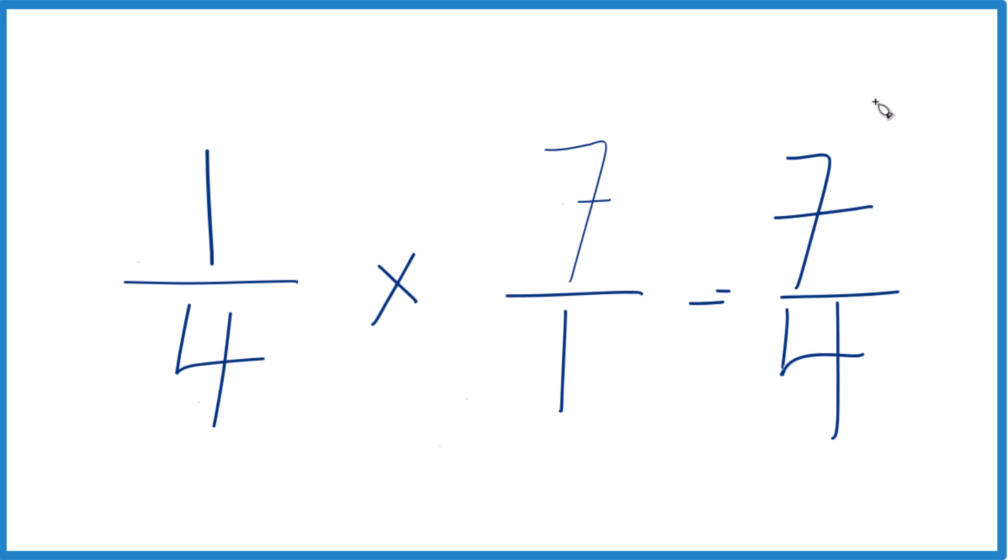This is an improper fraction because 7, the numerator, is larger than the denominator. Let's change it to a mixed number here.